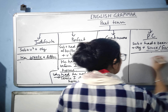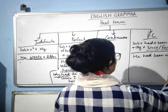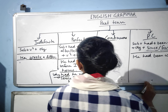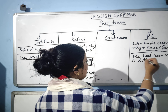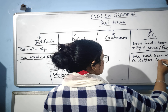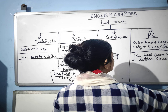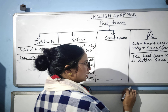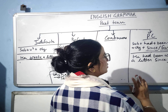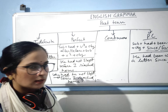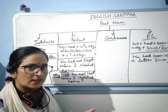For example: 'He had been writing a letter since 2 o'clock.' '2 o'clock' is certain time. The structure is: subject plus 'had' plus 'been' plus verb plus ing. Perfect continuous means the work started at a certain point and is continuously going on.